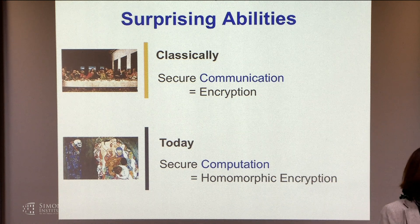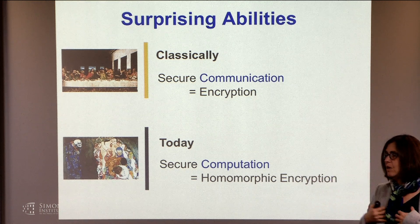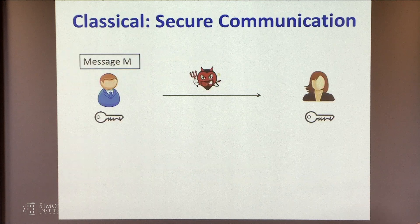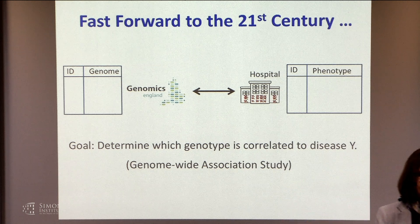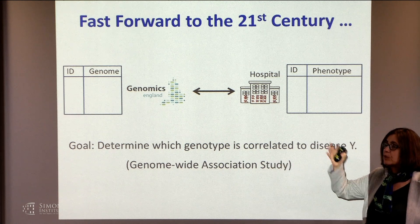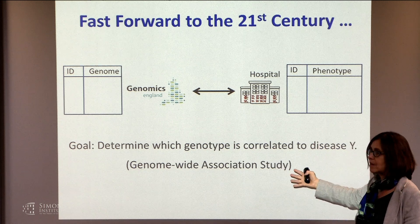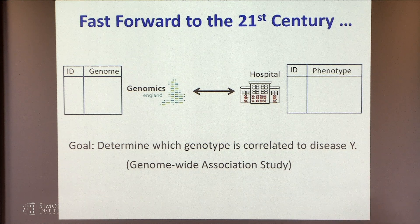Homomorphic encryption — people have probably heard about this term. The idea is a super-duper kind of encryption where not only can you encrypt in a public key setting (I can encrypt to Luca and he can decrypt, even if I've never met him), but furthermore you can compute on the encrypted data. For example, imagine a genomic database with lots of encrypted genetic data from many different people, and you would like to do a GWAS — a genome-wide association study — but without decrypting first. Homomorphic encryption allows you to do such computation. You could do GWAS analysis on encrypted genomic sequences with encryption based on lattices. We don't know how to do this based on number theory.